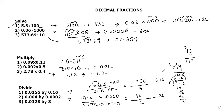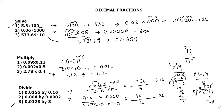I hope you are understanding. A similar question: 0.0128 ÷ 8. The denominator is already a whole number, so simply divide 0.0128 by 8. Does 8 go into 0? No, put a decimal; 0 again, put 0; then 12 ÷ 8 = 1 with remainder 4; 48 ÷ 8 = 6. The answer is 0.0016.